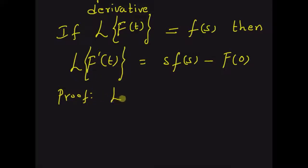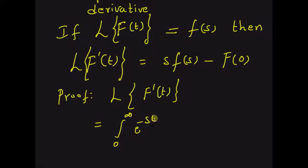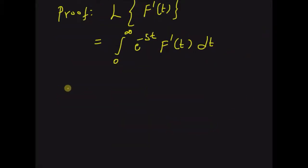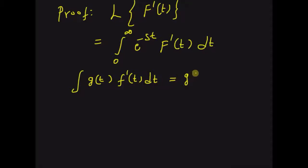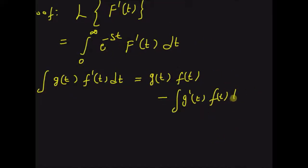Starting with the LHS, that is the Laplace transform of the derivative f'(t), which by definition equals the integral from 0 to infinity of e^(−st) · f'(t) dt. Now, by using the formula for integration by parts — that is, integral of g(t) · f'(t) dt equals g(t)·f(t) minus the integral of g'(t)·f(t) dt.